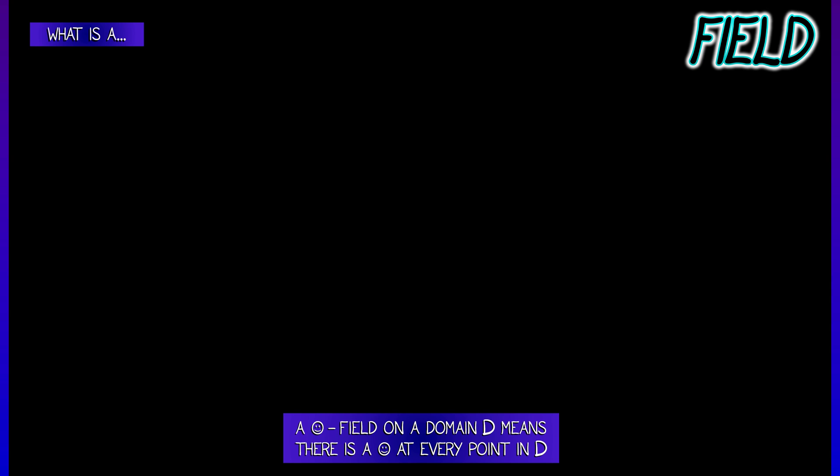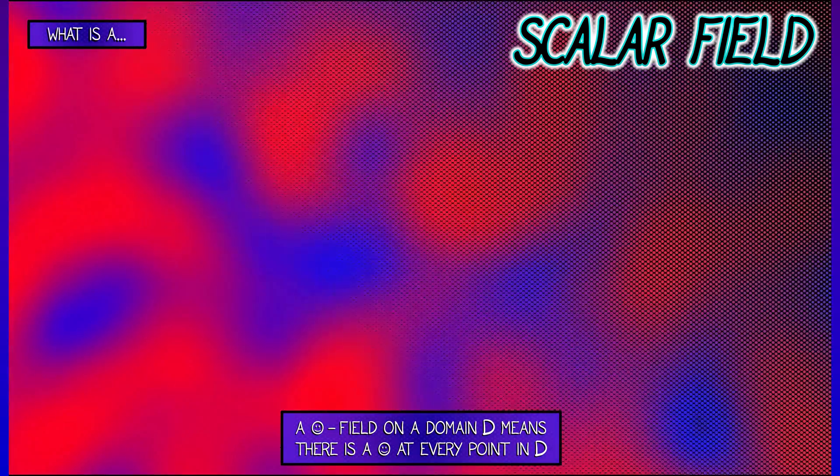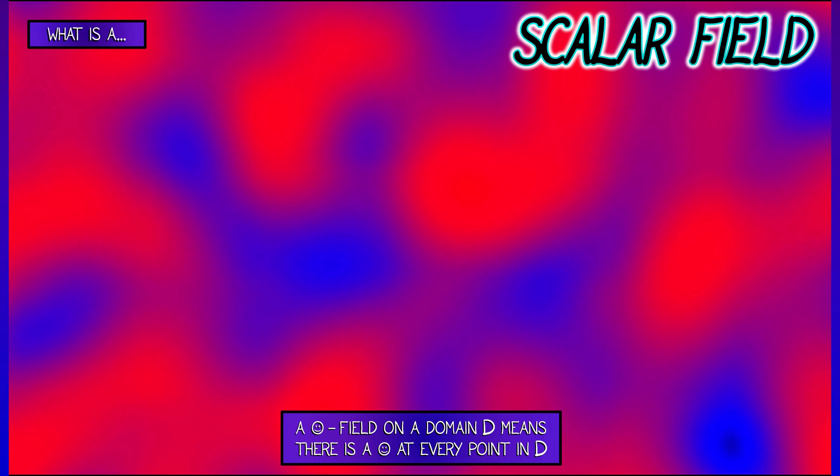For example, if I say what is a scalar field, then you know what that is, right? That means you have a scalar at every single point in space. And that's not so bad, you can see that, you can draw pictures of that. We've worked with that all throughout multivariable calculus.